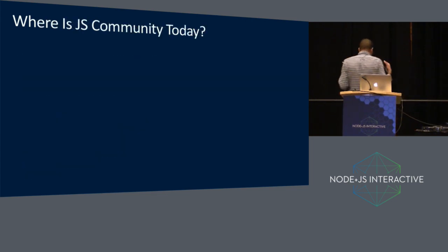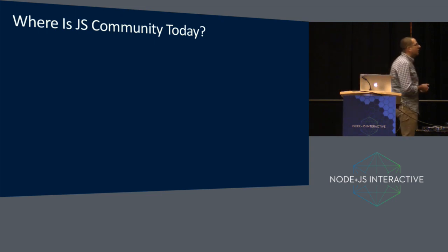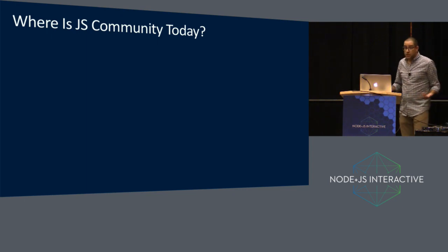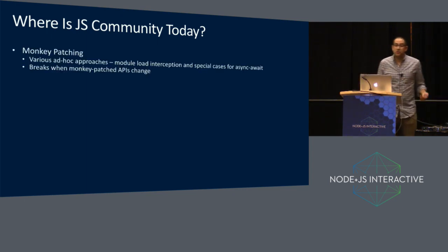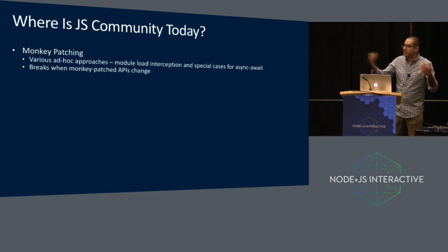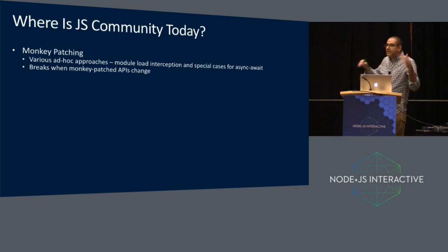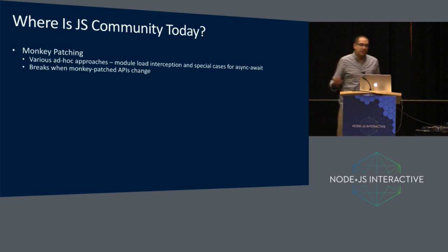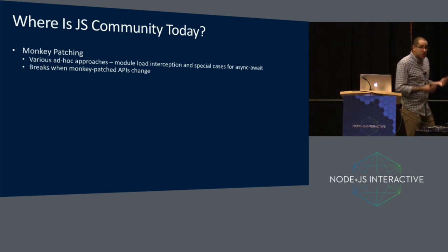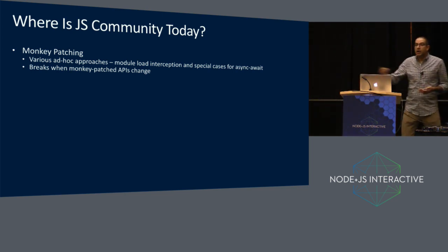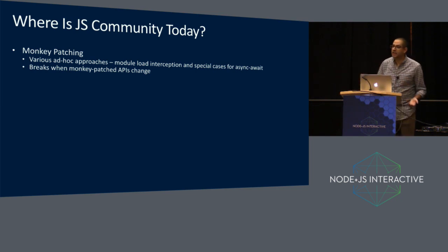The importance is evidenced by the JavaScript community taking multiple attempts to address this. Monkey patching is frequently used — that's where you overwrite some function in an API, intercept the parameters, and try to track the necessary information you need. It works great until it doesn't. It doesn't work when those APIs change or when you need to monkey patch something implemented at the VM level — so async/await, native promises — those things can't be monkey patched.